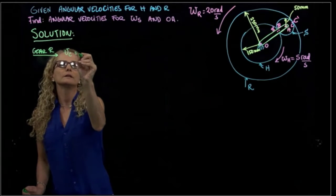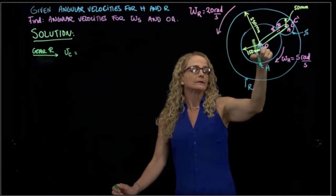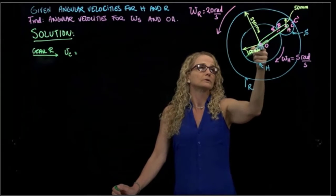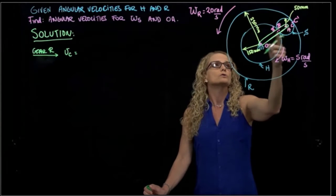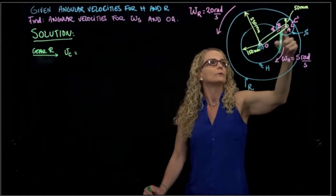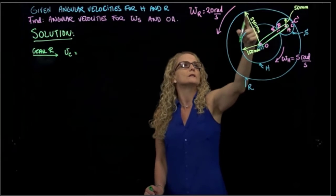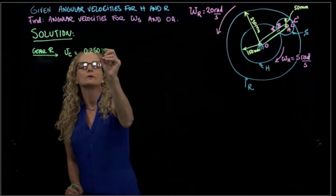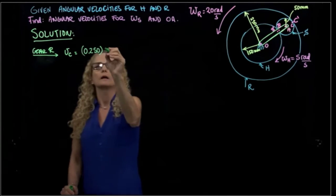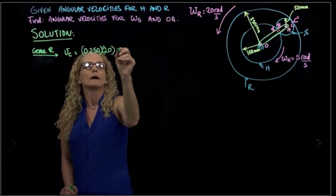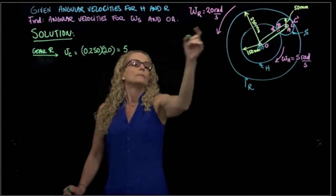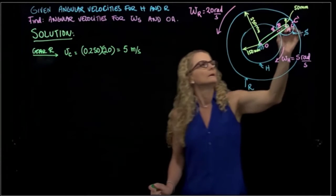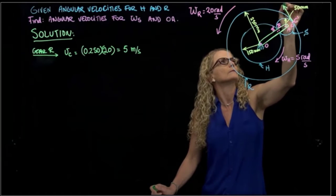Using the system fixed to gear R, I will calculate the velocity of C. The velocity of C equals the distance — which is the center of rotation, always rotating about O — times the angular velocity. That distance is 250 millimeters, so it will be 0.250 meters times 20, giving a velocity of C equal to 5 meters per second.